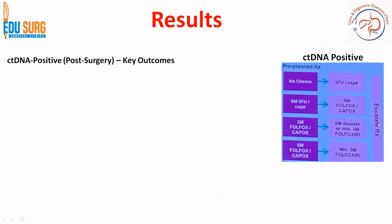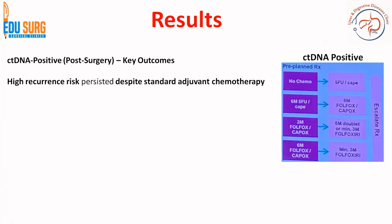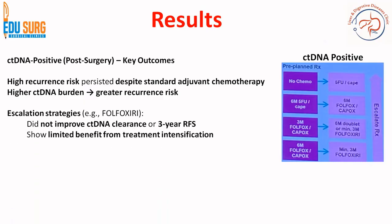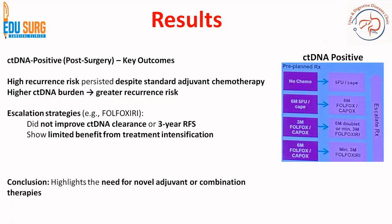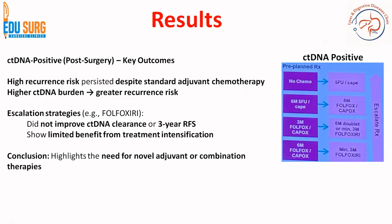For ctDNA-positive patients, escalation means converting no chemo to single agent, single agent to doublet, increasing doublet duration, or adding a drug such as FOLFOXIRI. However, high recurrence risk persisted despite escalation to standard adjuvant therapy. A higher ctDNA burden indicates greater recurrence risk, but escalation strategies did not improve ctDNA clearance or 3-year recurrence-free survival. Therefore, there was limited benefit from treatment intensification, and it was concluded that escalation was not producing positive outcomes in this part of the trial.